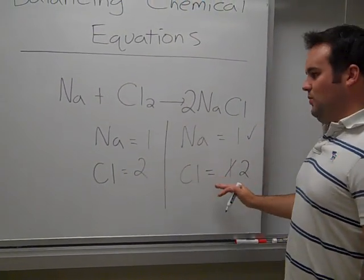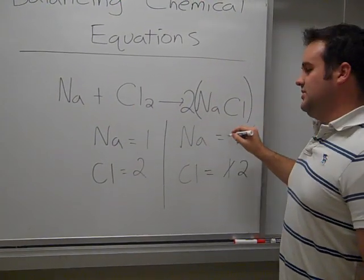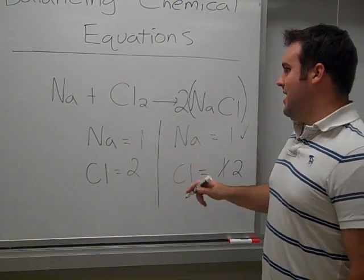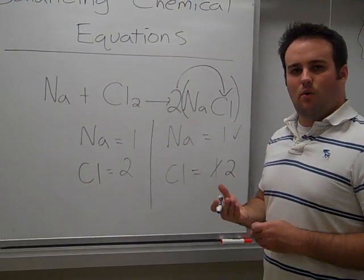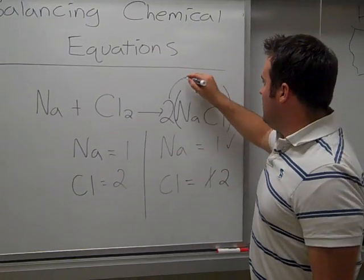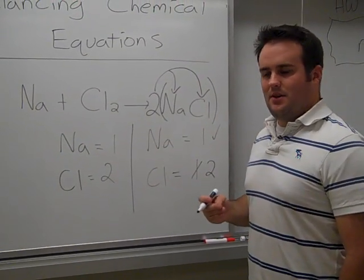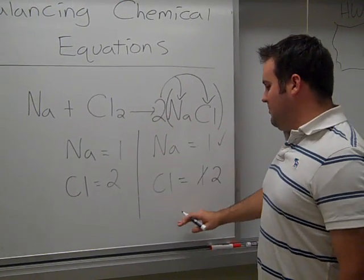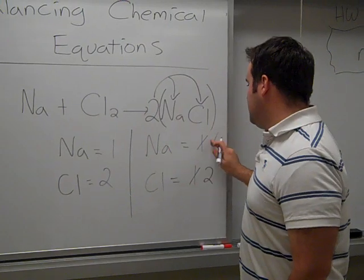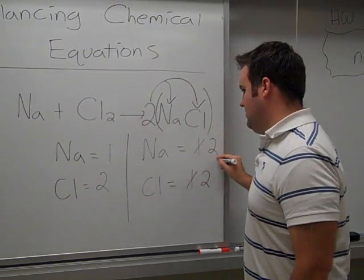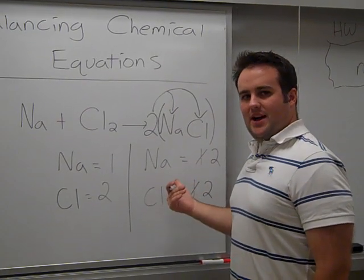Now that the chlorine atoms are balanced, what do you think happened to the sodium? Well, let's put some parentheses around this, kind of like the distributive property in math. We multiplied two by one chlorine, but now we also distributed to the sodium atom. So now, as a result of balancing out the chlorine atoms here, we have now changed this amount of sodium to two. This unbalanced the reaction again.